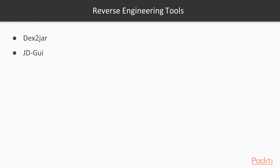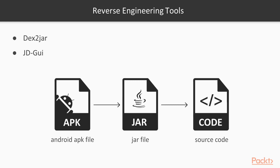The dex2jar tool converts your APK file into a JAR file — that is the first step. Then, once you have the JAR file, the JD-GUI tool converts it into source code files where you can check the source code available in the application. So first we use dex2jar to convert the .apk into a .jar file, and then we use JD-GUI to open up the source code from that JAR file.